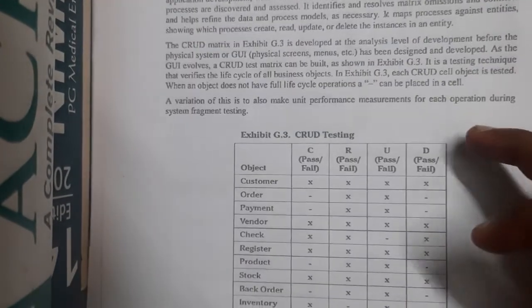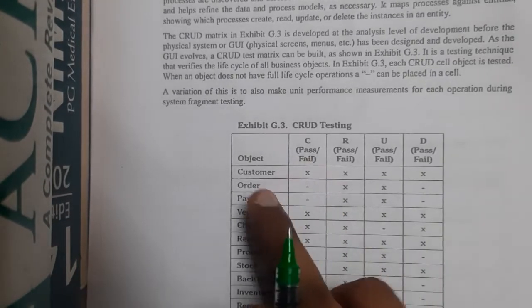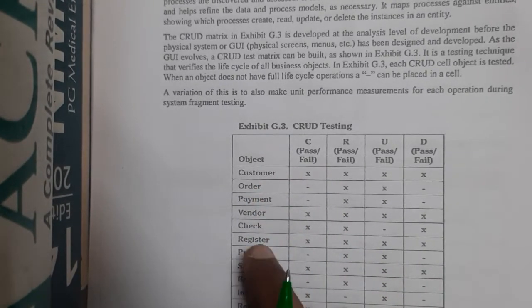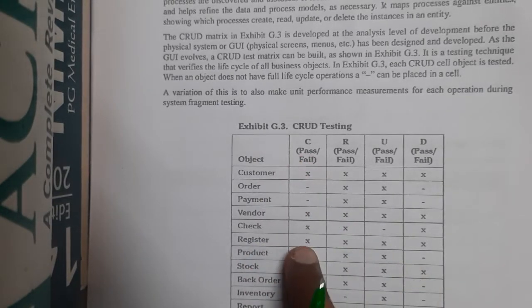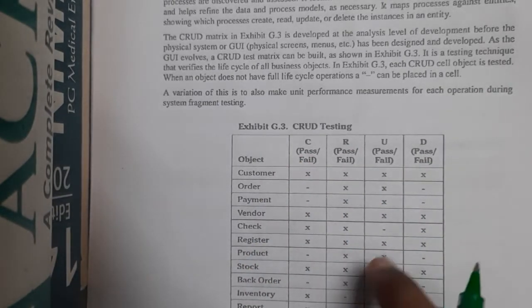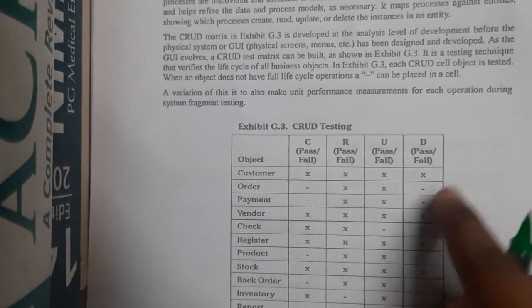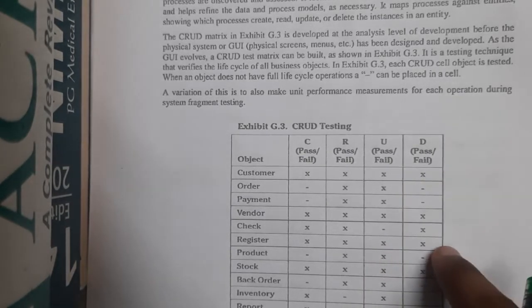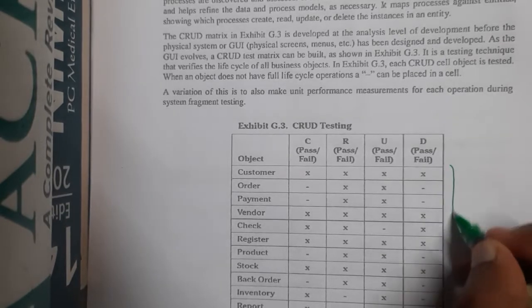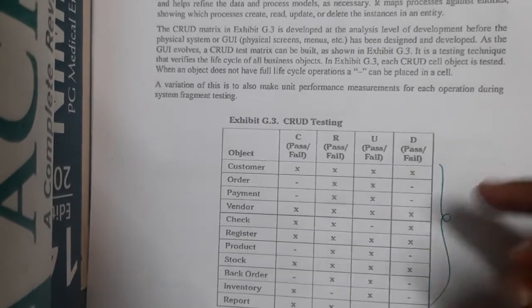For this, you can draw a matrix. In that matrix you will be mentioning your requirement objects. For example, registration — is it creating a table, yes or no? Are you able to read the data, yes or no? Are you able to update the data, yes or no? Are you able to delete the data? In this way you maintain a matrix or grid structure to store the values.